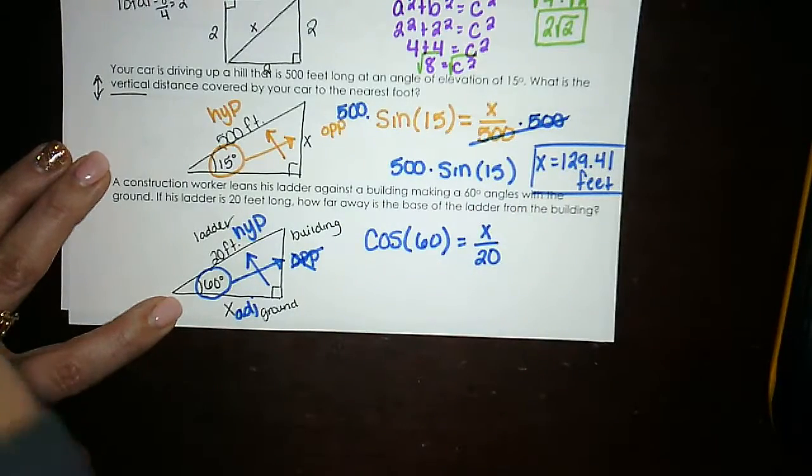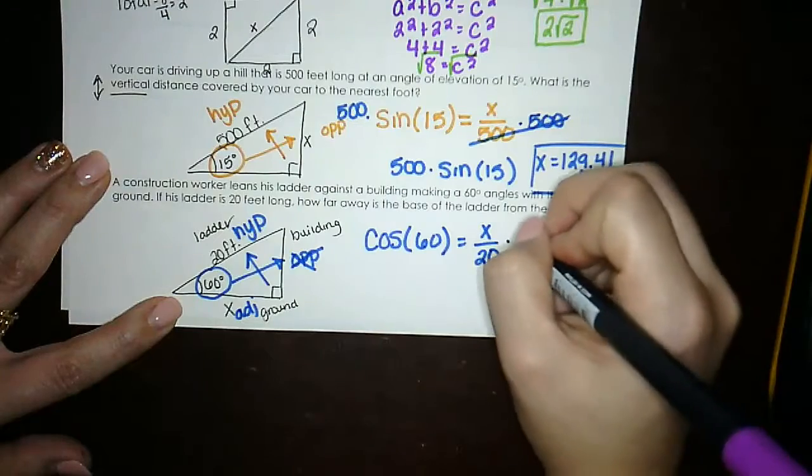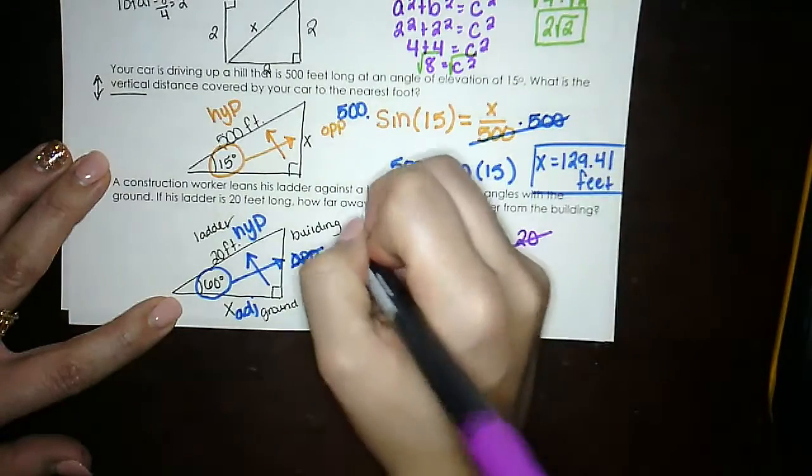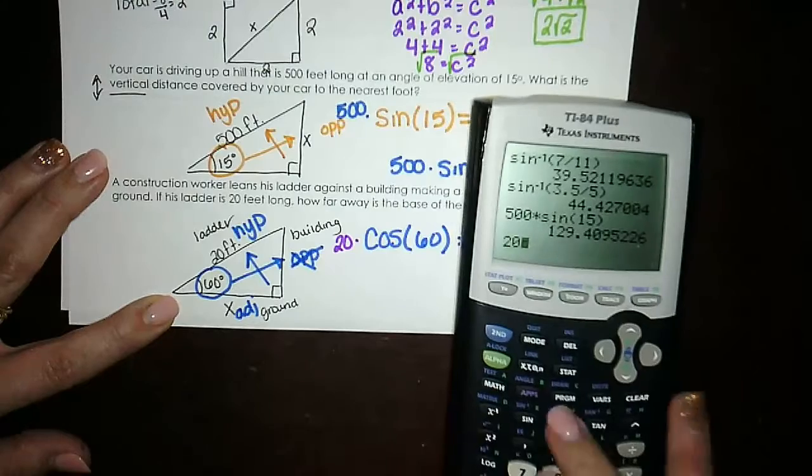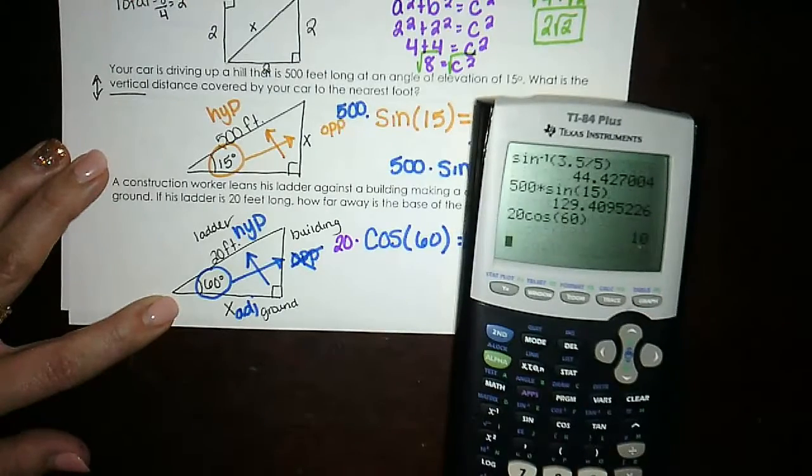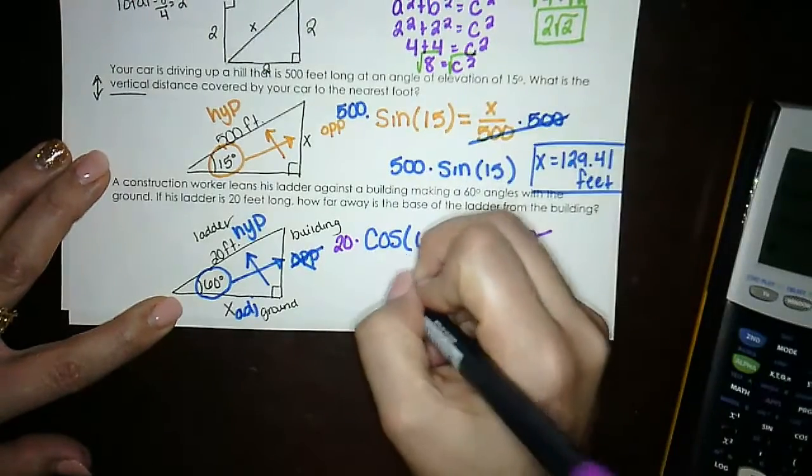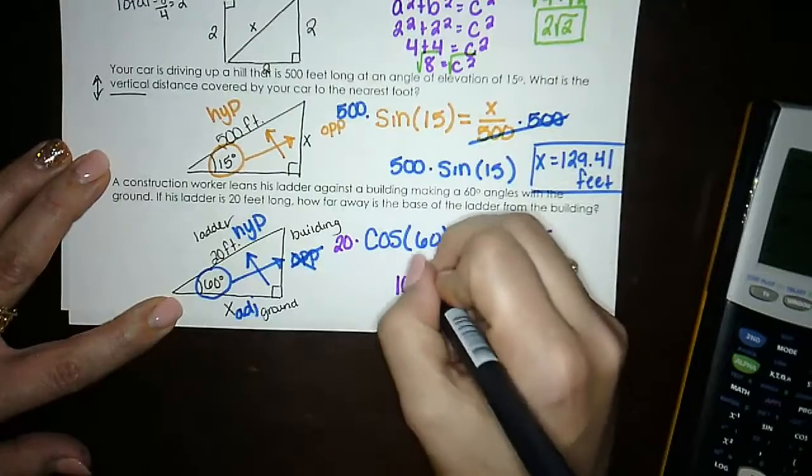To get 20 out of the denominator, you multiply by 20 on both sides. And then we put this in the calculator. 20 cosine 60 gives us 10. So it's 10 feet.